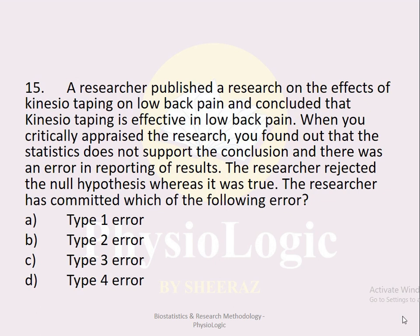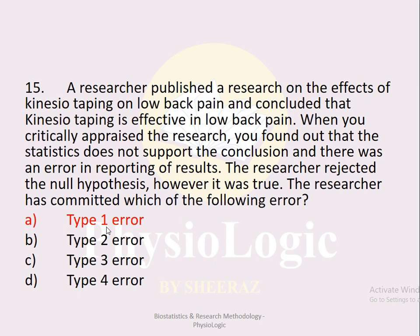MCQ number fifteen: A researcher published a study on the effects of kinesio taping on low back pain and concluded it was effective. When you critically appraise the research, you find the statistics do not support the conclusion — the researcher rejected the null hypothesis whereas it was true. Which error has the researcher committed? Option a type 1 error, option b type 2 error, option c type 3 error, option d type 4 error. The correct option is option a, type 1 error. Type 1 error (alpha error) occurs when a researcher rejects the null hypothesis when it is true; type 2 error (beta error) is when the null hypothesis is accepted when it is actually false.